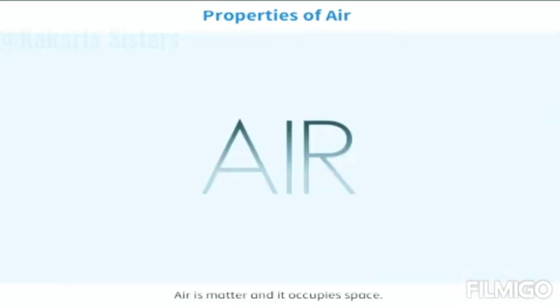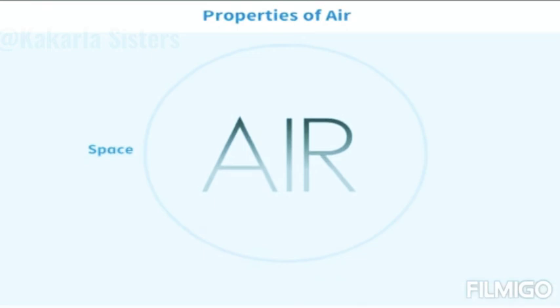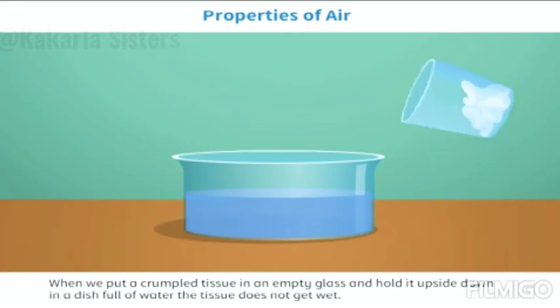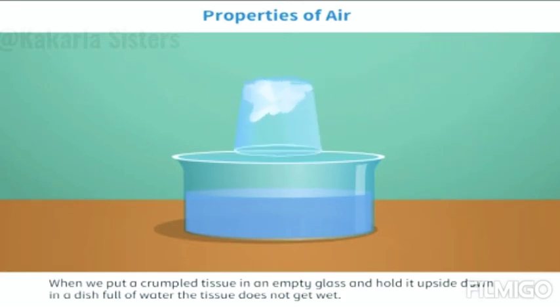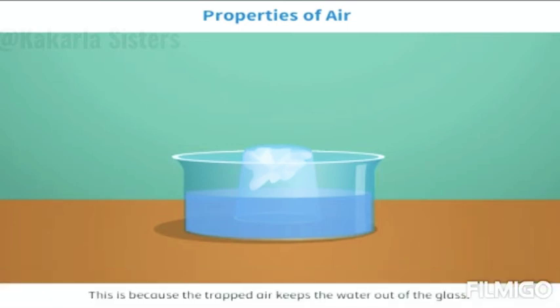Air is matter and it occupies space. When we put a crumpled tissue in an empty glass and hold it upside down in a dish full of water, the tissue does not get wet. This is because the trapped air keeps the water out of the glass.